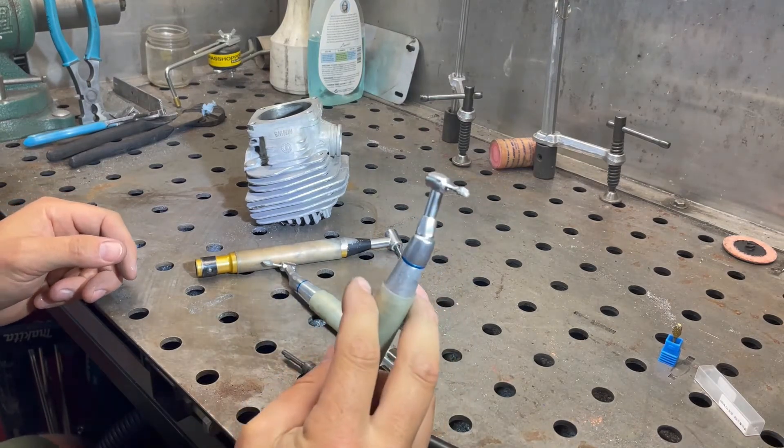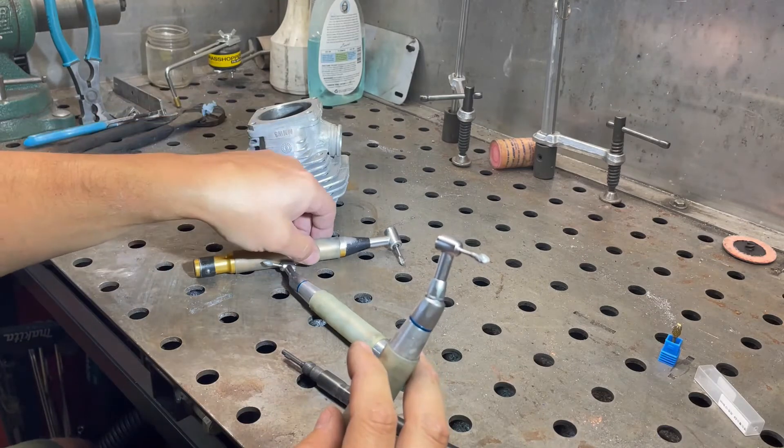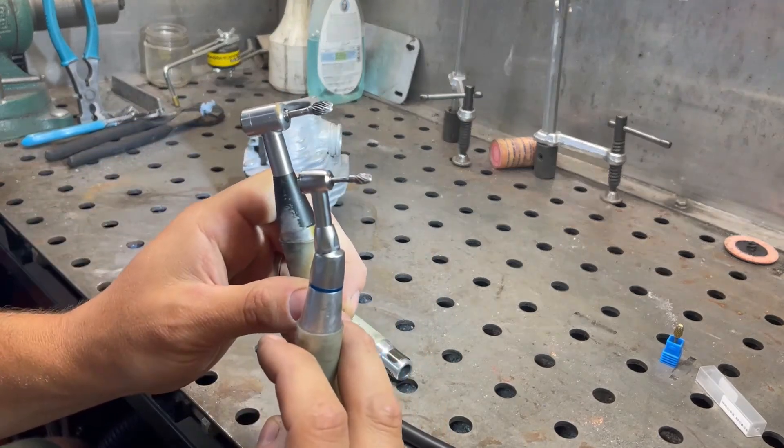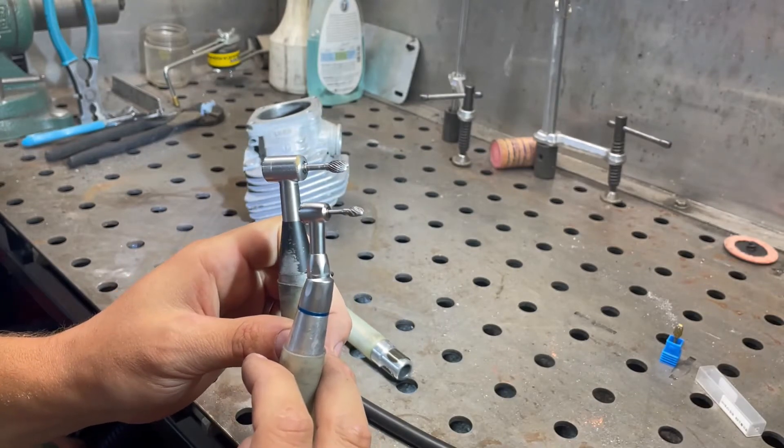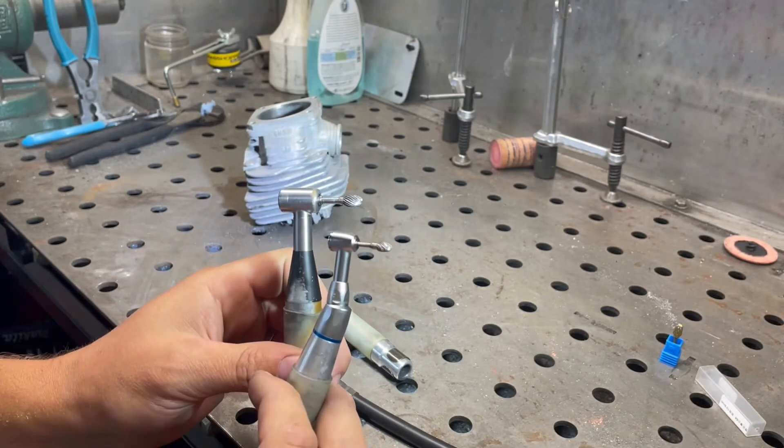I know people are going to ask for different kinds of burrs. I've always tended to use a single cut egg shape. The single cuts in my opinion clog up less than double cuts and leave a better finish.